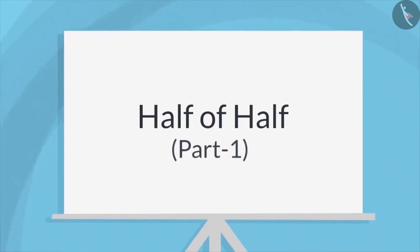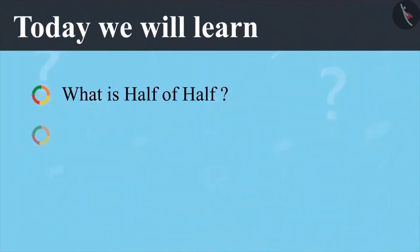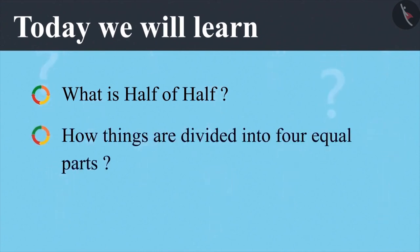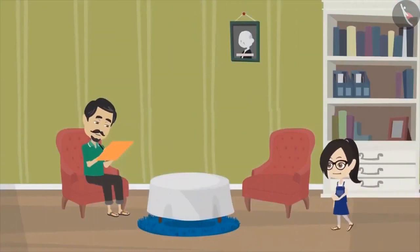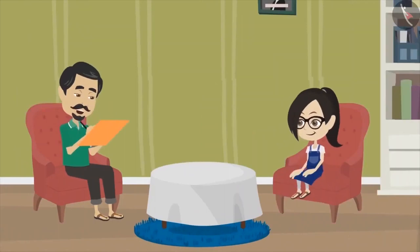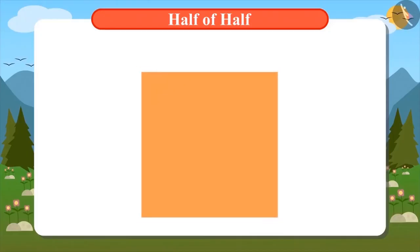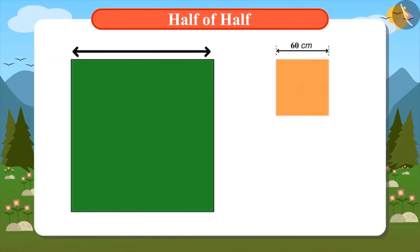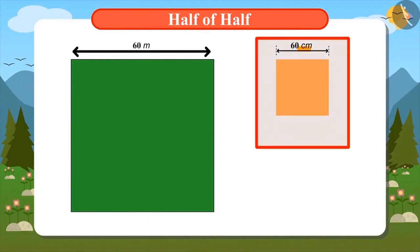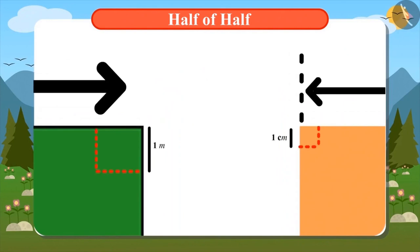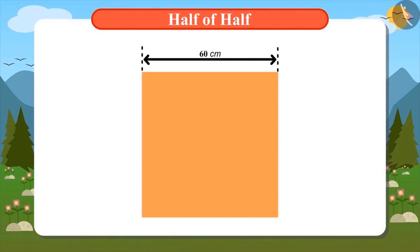Half of Half, Part 1. Today we will learn what is half of half and how things are divided into four equal parts. What are you doing, daddy? This time I am thinking of planting four different crops instead of one in our field — tomato, chili, onion, and carrots. The length of our field is 60 meters and the length of this paper is 60 centimeters, meaning one meter of the field is taken as one centimeter on paper. I am trying to divide our field into four equal parts so that I can plant one crop in one-fourth part.